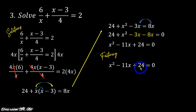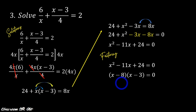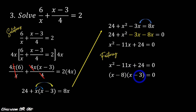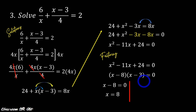We look for two factors whose product is positive 24 and whose sum is negative 11. So we have (x minus 8)(x minus 3) equals zero, because negative 8 multiplied by negative 3 is positive 24, and negative 8 plus negative 3 is negative 11. Equating both factors to zero: from x minus 8 equals zero, x is 8; and from x minus 3 equals zero, x is positive 3. Again, we cannot confirm these as solutions until we show checking.